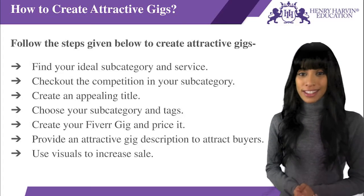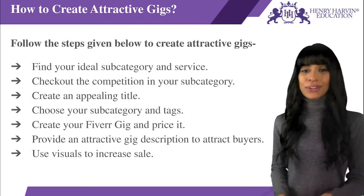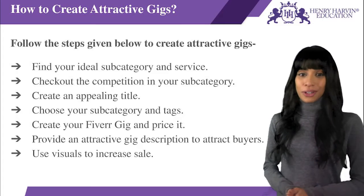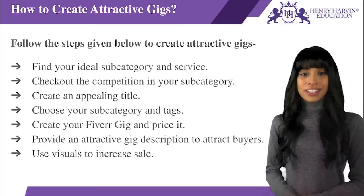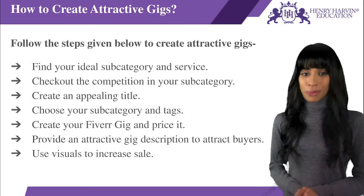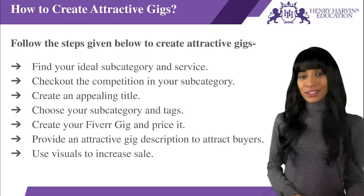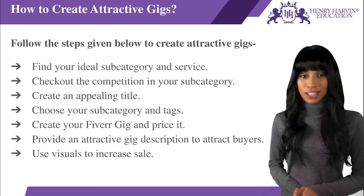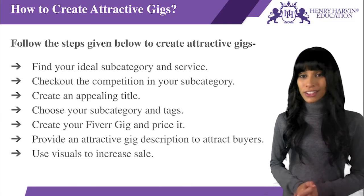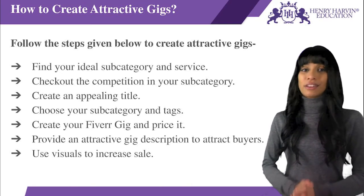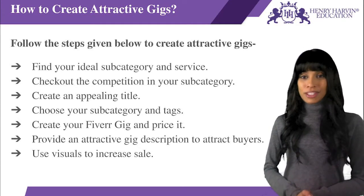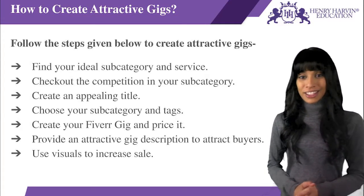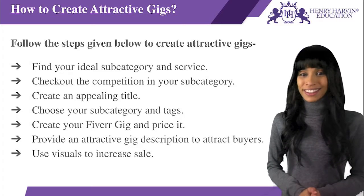Now you can create your Fiverr gig and price it. After your title, you have 100 characters to create a catchy description for each gig package. Choose your gig options, which vary depending on the subcategory. Graphic design gives options for number of concepts, resolution, 3D mockups, and more. Content marketing provides options for additional optimized titles, marketing action plans, and content sharing. Set your price for each package anywhere between $5 and $995, then add your gig extras — items you can charge for, like revisions, extra fast delivery, or more time spent on the gig.